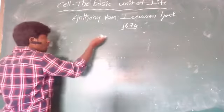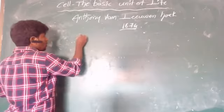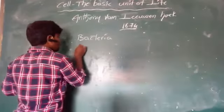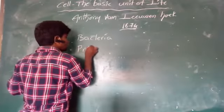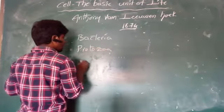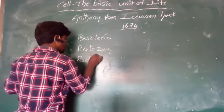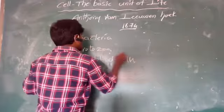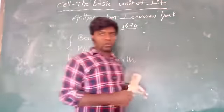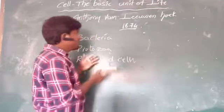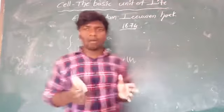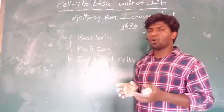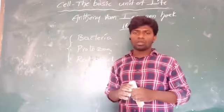Leeuwenhoek was the first person to observe microorganisms. The microorganisms he observed included bacteria, protozoa, and other microscopic life forms. So these were observed by Antonie van Leeuwenhoek under the microscope.